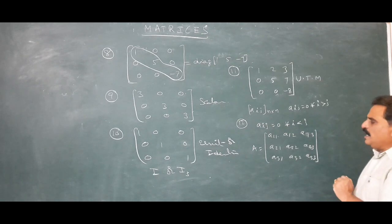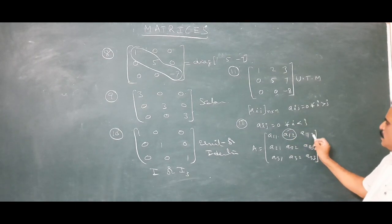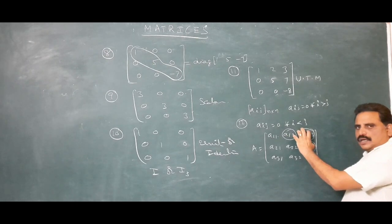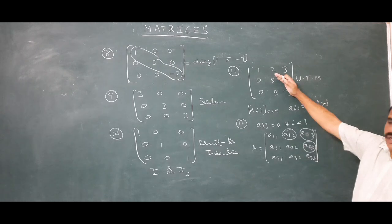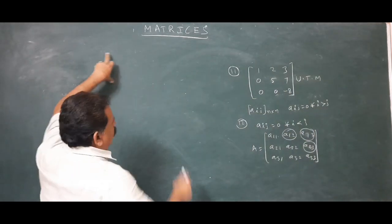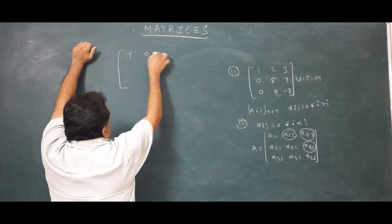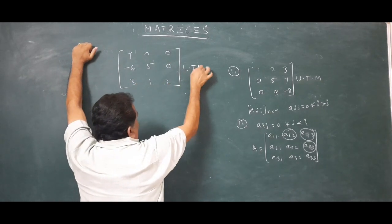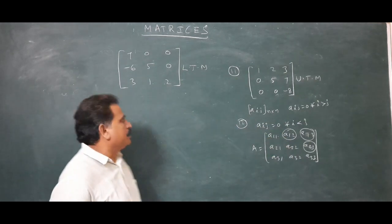The condition for upper triangular matrix is: aij = 0 when i > j. Lower triangular matrix is where the upper elements are zeros. The condition for lower triangular is: aij = 0 when i < j — elements like a12, a13, a23 are zero. An example of a lower triangular matrix is [7, 0, 0; -6, 5, 0; 3, 1, 2], where all elements above the diagonal are zero.